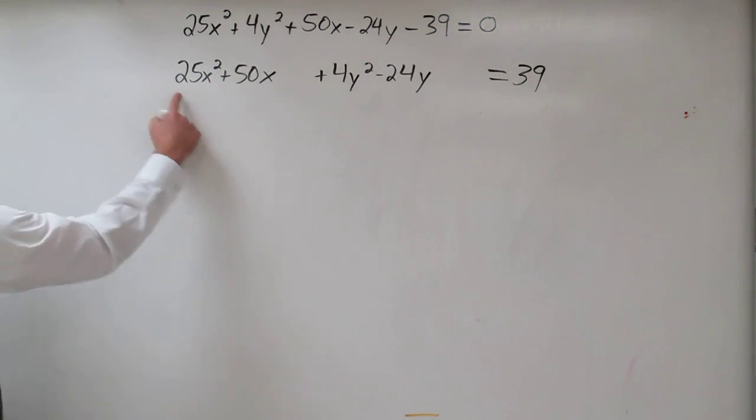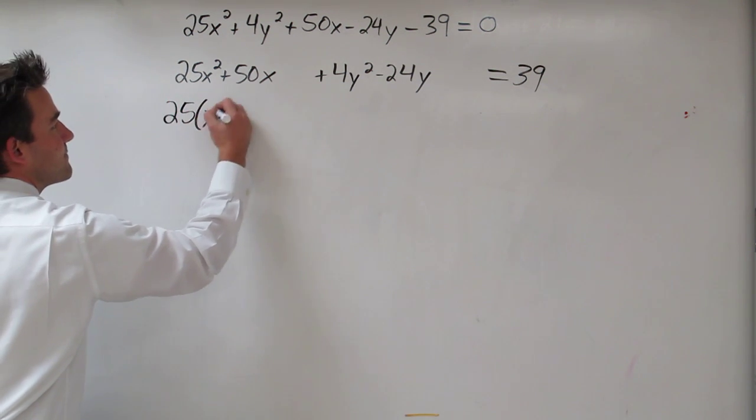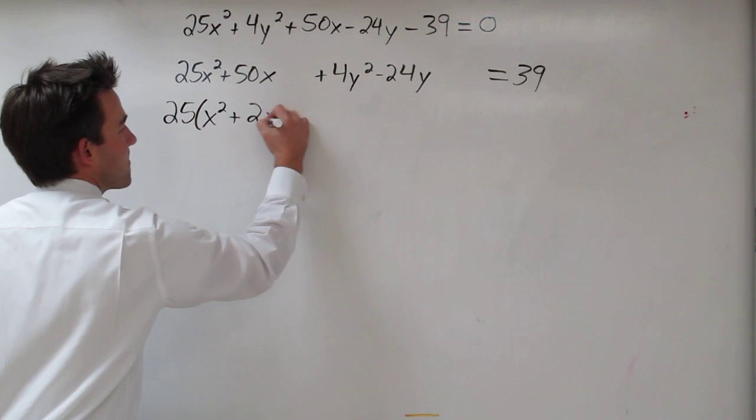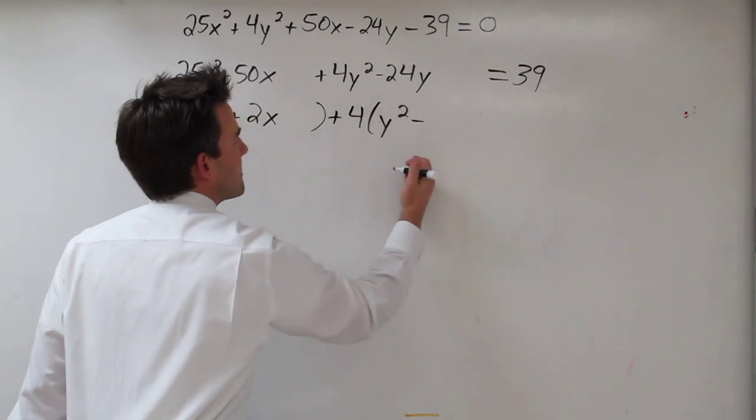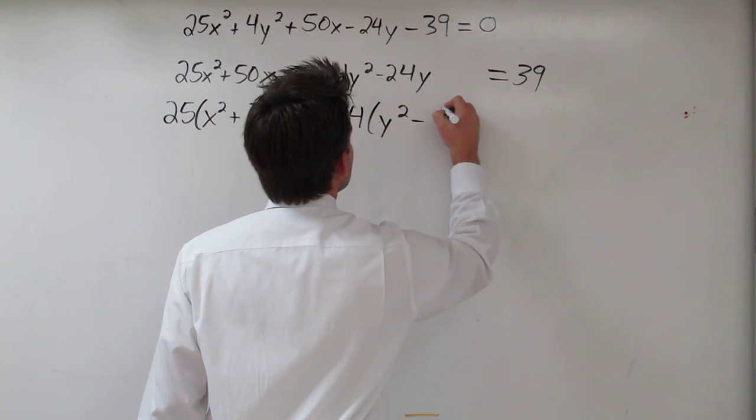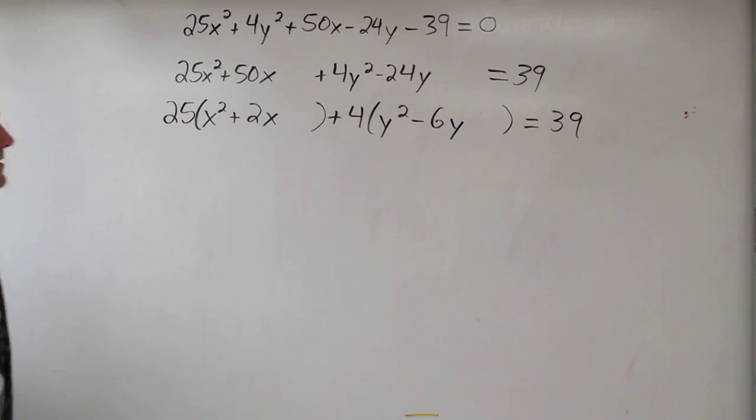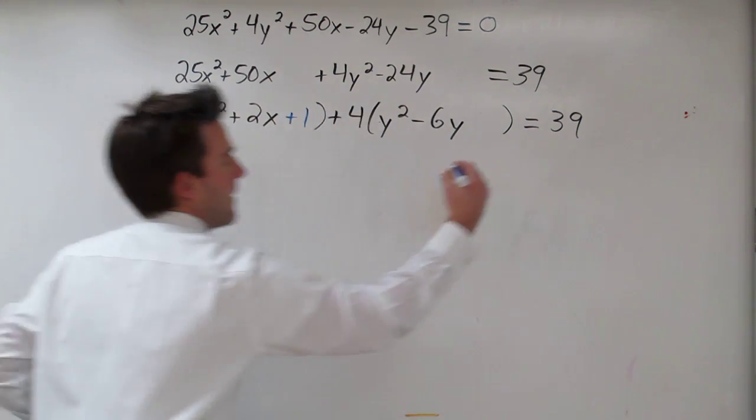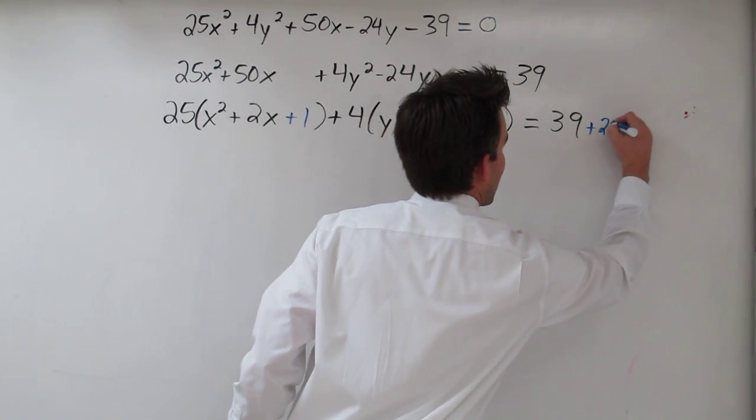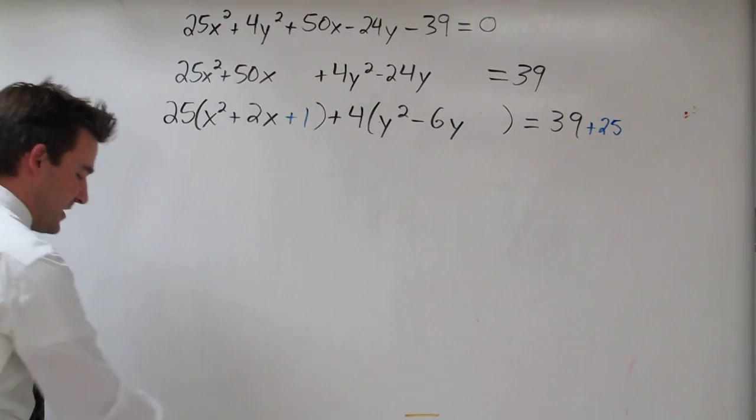So the first thing I'm going to do is group the variables. Next, I'm going to factor out the coefficients of the squared terms. Next, I'm going to complete the square, being careful that whatever I add on this side of the equation, I also add on the other side.